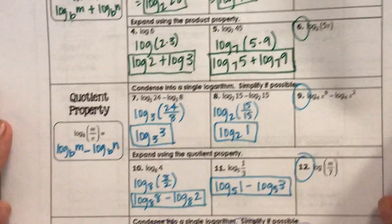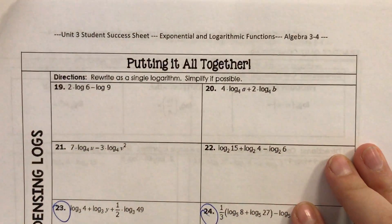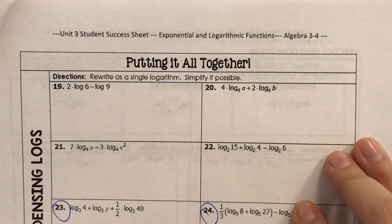So we are taking all of these properties we just learned—product, quotient, power—and we are making one single logarithm. Okay, so let's do it.